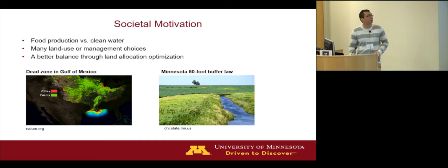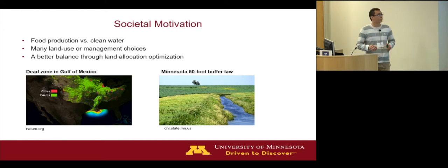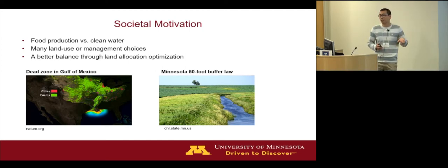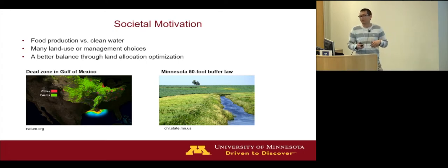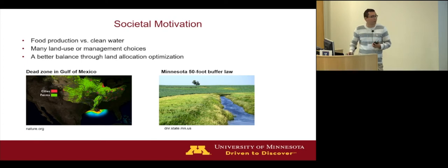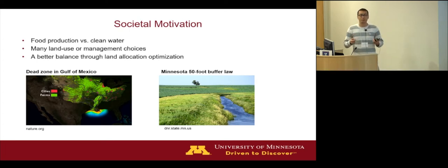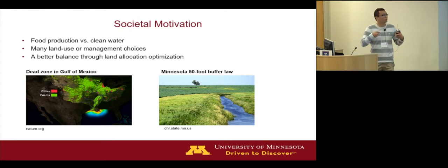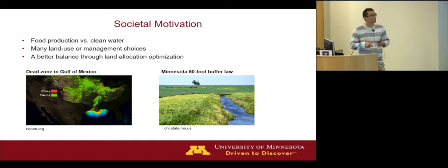This work is motivated by the dilemma between food production and the need for clean water. There is a huge demand on food production and that has created problems in water quality. A well-known example is the dead zone in the Gulf of Mexico. Minnesota also has a new state law saying that in agricultural watersheds, on average there must be 50-feet-wide vegetative buffer strips along water bodies to filter out sediments and protect water quality.